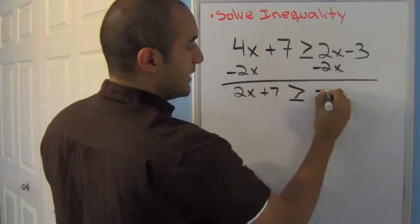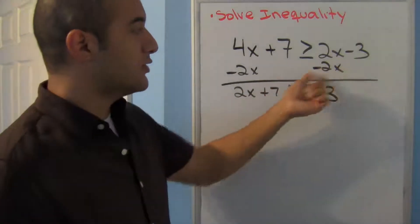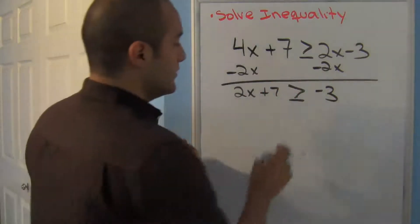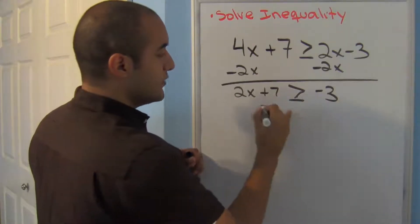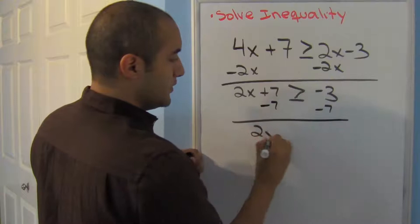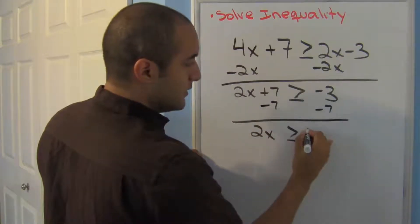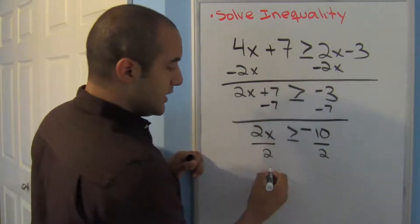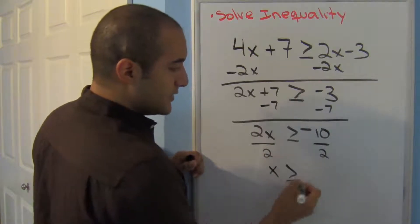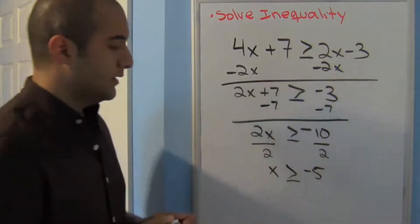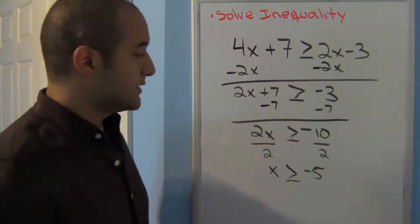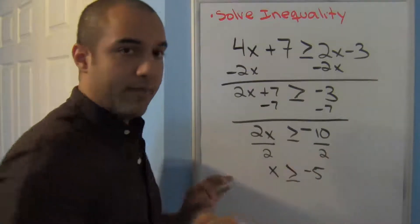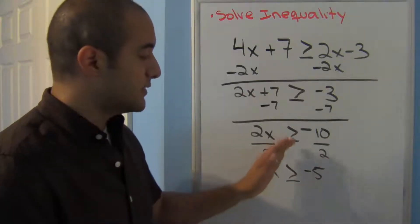2x plus 7 is greater than or equal to negative 3. Remember, whenever you add or subtract, your inequality symbol stays the same. I have a positive 7, so I subtract — giving 2x less than or equal to negative 10. Dividing by positive 2, nothing changes with my symbol since I'm dividing by a positive, so my symbol stays the same and I get negative 5.